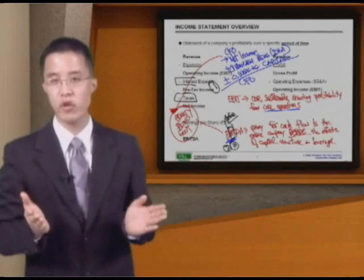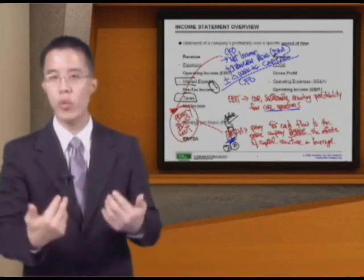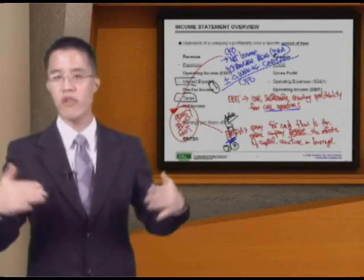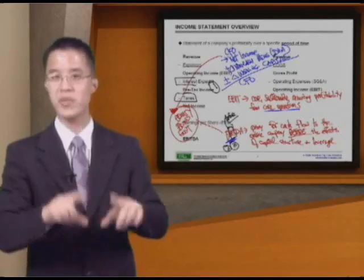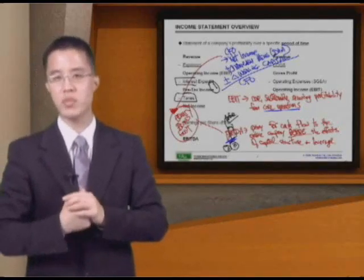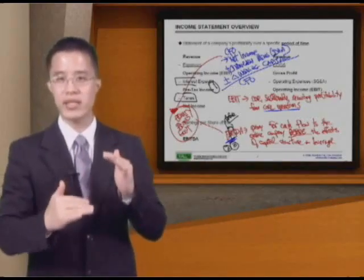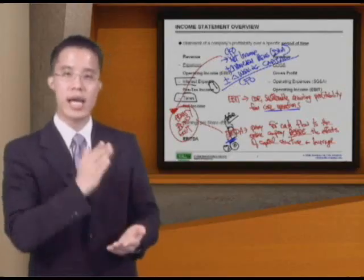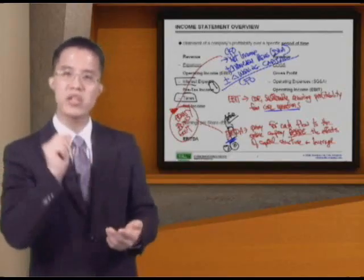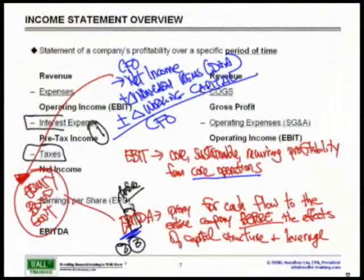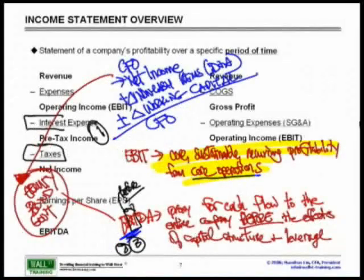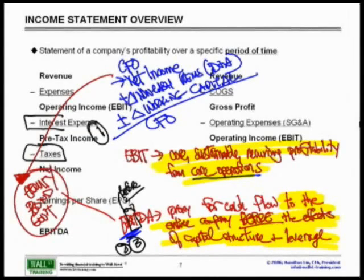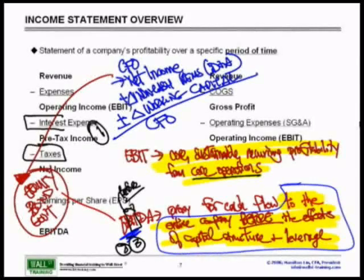Whereas net income — or CFO technically — applies only to equity stakeholders, what we're always trying to capture is how the company is doing from a profitability and core ability to generate profits and cash flow from the entire company perspective. We should also apply the same extended definition to EBIT: Core Sustainable Recurring Profitability from Core Operations to the entire company before the effects of capital structure and leverage.